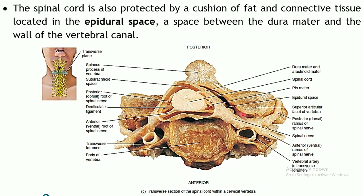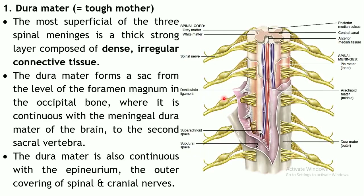There are some spaces in between different layers which are also filled with protective fluids. The space in between the wall of the vertebra and the outermost layer of the meninges is known as the epidural space. This space — outside the dura mater and between the dura mater and the vertebra — contains fat and connective tissue, providing additional cushioning to the spinal cord.